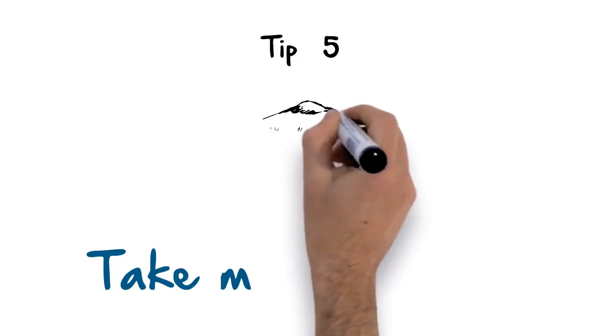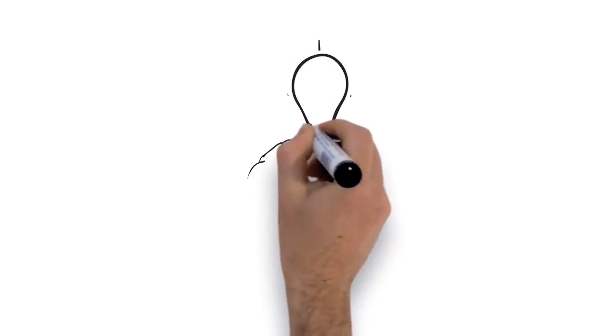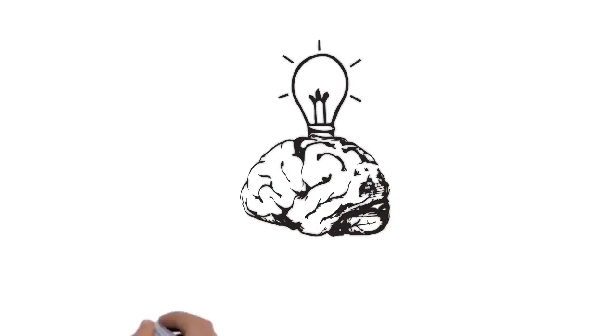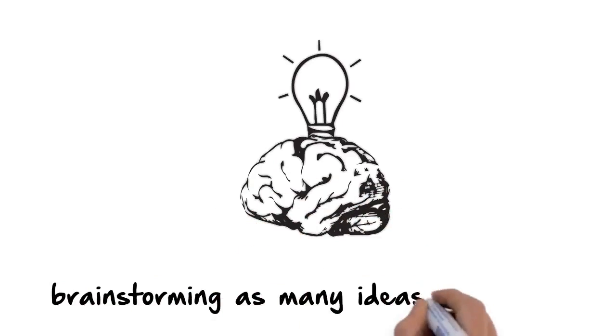Tip 5: Take Massive Action. Write down how you can achieve this. Come up with a massive action plan by brainstorming as many ideas as you can.